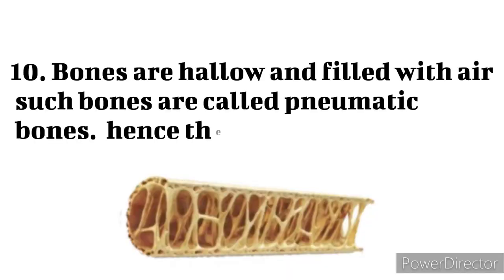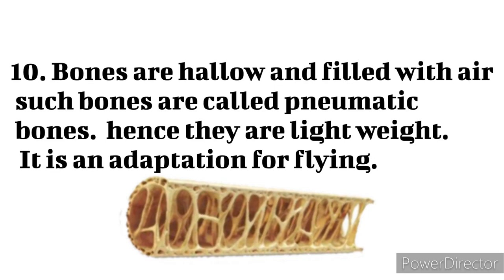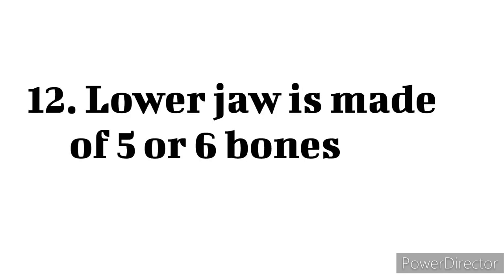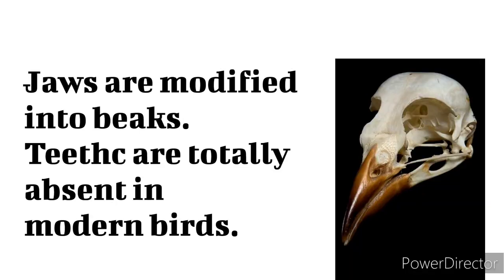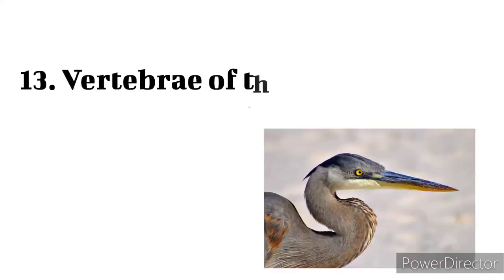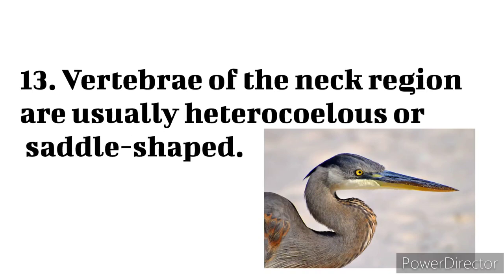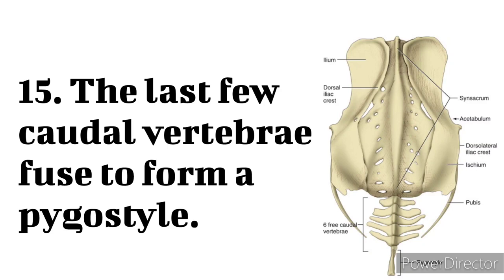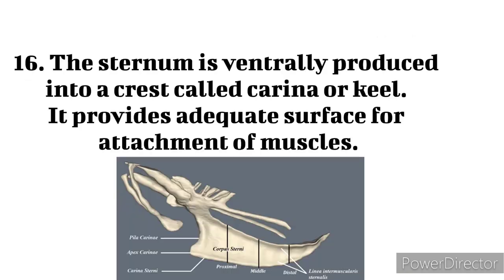10. Bones are hollow and filled with air; such bones are called pneumatic bones, hence they are lightweight. It is an adaptation for flying. 11. Skull is monocondylar. 12. Lower jaw is made of 5 or 6 bones. 13. Jaws are modified into beaks. 14. Teeth are totally absent in modern birds. 15. Vertebrae of the neck region are usually heterocoelous or saddle shaped. 16. A composite bony plate called synsacrum is formed by the fusion of 14 vertebrae. 17. The last few caudal vertebrae fuse to form a pygostyle. 18. The sternum is ventrally produced into a crest called carina or keel. It provides adequate surface for attachment of muscles.